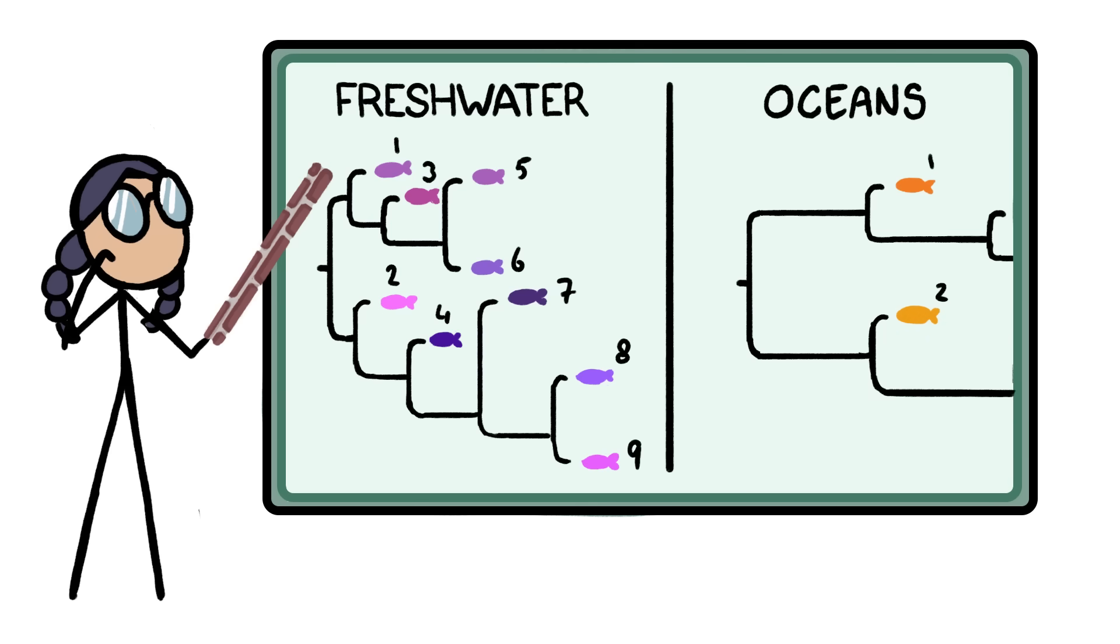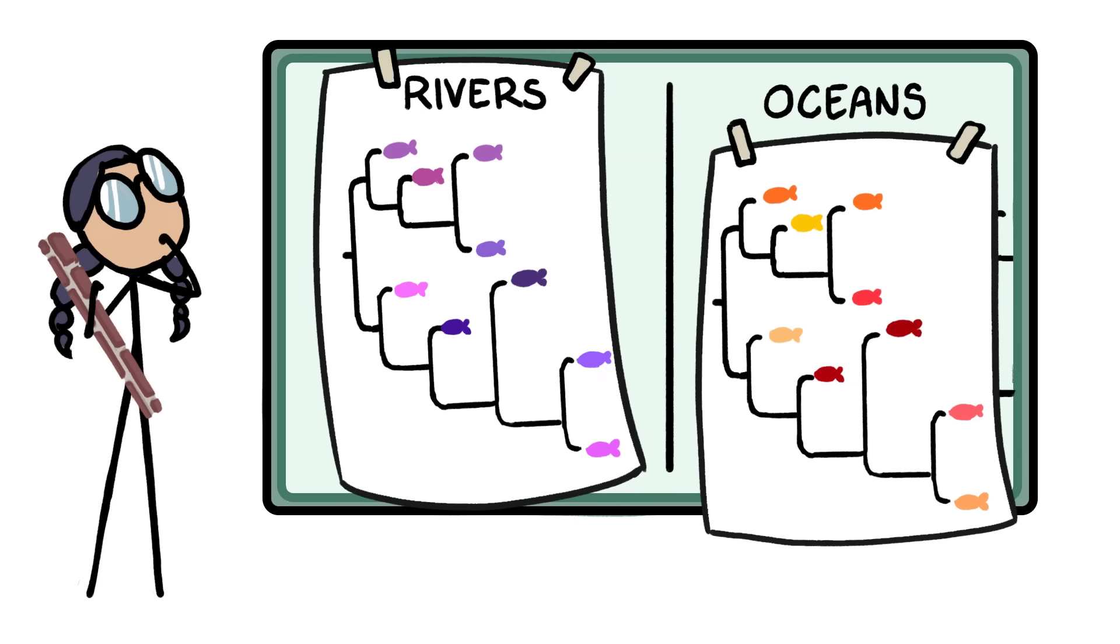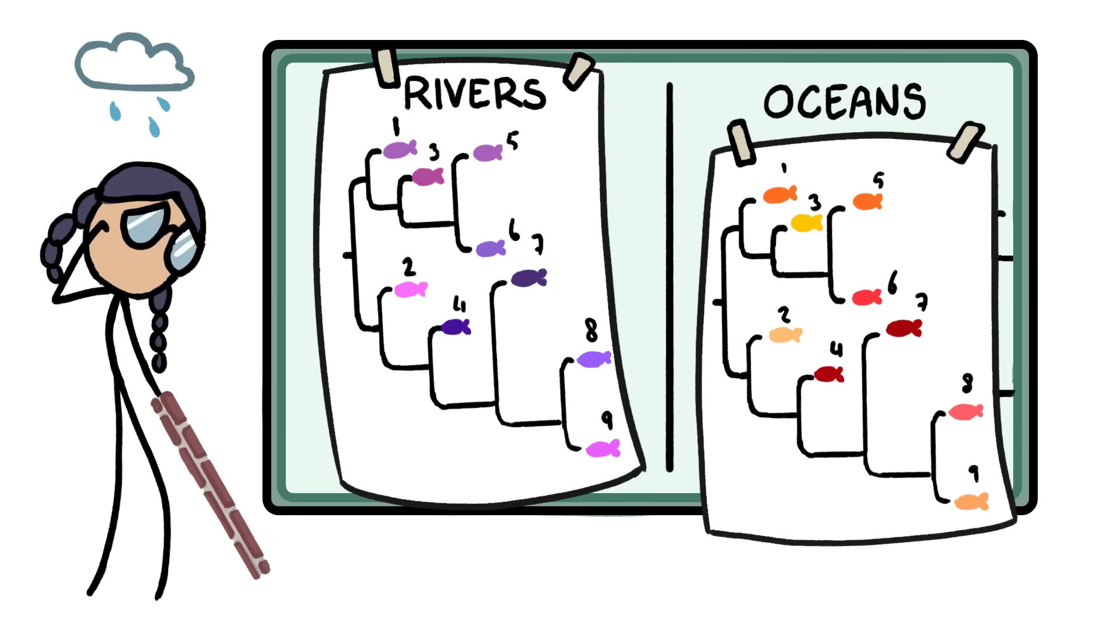But a recent study found that both rivers and the ocean develop new species at similar rates, bursting the bubble on the idea that isolation alone is the answer to the paradox.